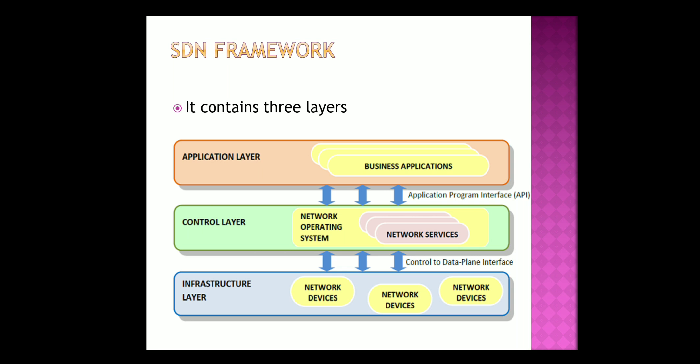The last layer is the infrastructure layer, also called the data plane layer. This layer contains the actual network components. The network devices reside in this layer and expose their network capabilities through the control to the data plane infrastructure.